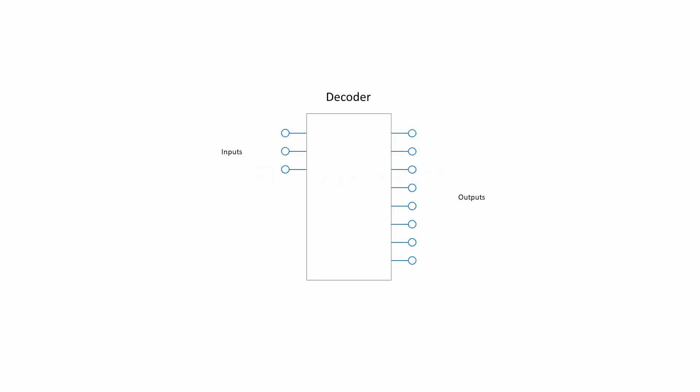A decoder, or to be more precise, a binary decoder, is an electronic component that takes multiple inputs and uses them to activate one of many possible outputs. This decoder uses three inputs to select one of eight possible outputs. It's therefore known as a three to eight decoder.